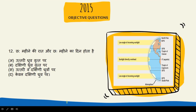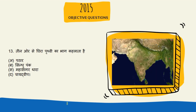Next question: 6 mahinon ki raat aur 6 mahinon ka din hota hai. To yeh jo hai uttari wa dakshini dono dhruv par hota hai. Next question: Teen or se ghira prithvi ka bhaag kehlata hai, to iska sahi answer hai — Pradeep.